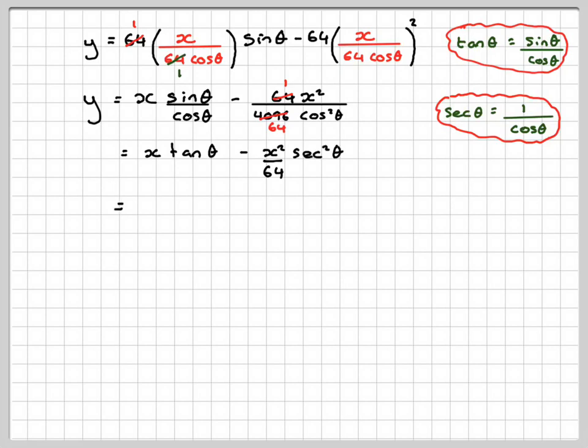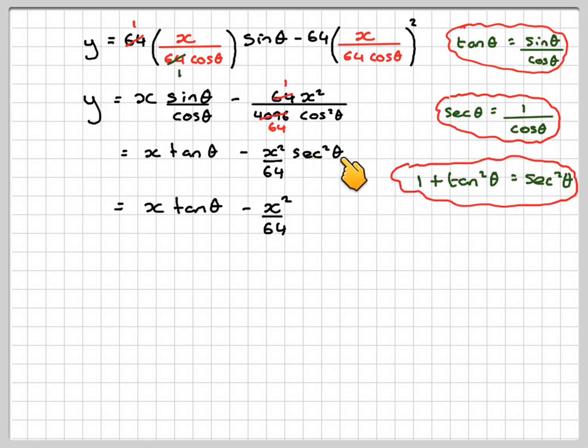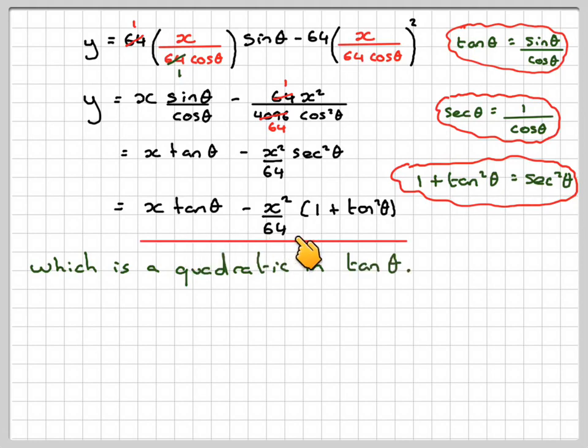The 64 and this will cancel, this is 64 squared, so this becomes 64. So we've got x over 64. And then 1 over cos² - well, sec θ is 1 over cos, so this will become sec² θ. Now there's a trig identity: we know that 1 + tan² equals sec². So we're going to replace this sec² here with 1 + tan² θ, which is a quadratic in tan θ. This is my answer to part A.